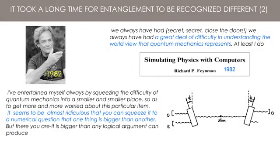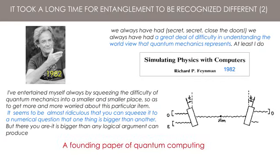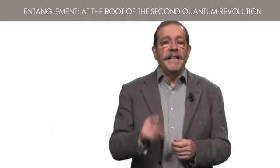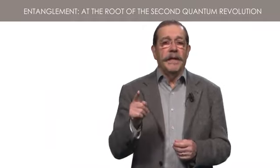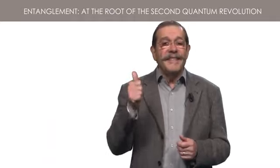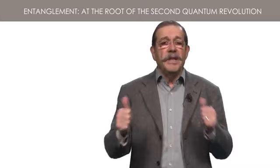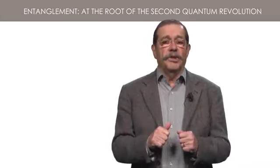An important part of Feynman's paper is the vision that when you have a new concept, you can use it for something new. And he introduces basic ideas of quantum computing. The second quantum revolution is based on the ability to manipulate and observe single quantum objects, and to control entanglement between these individual quantum objects.